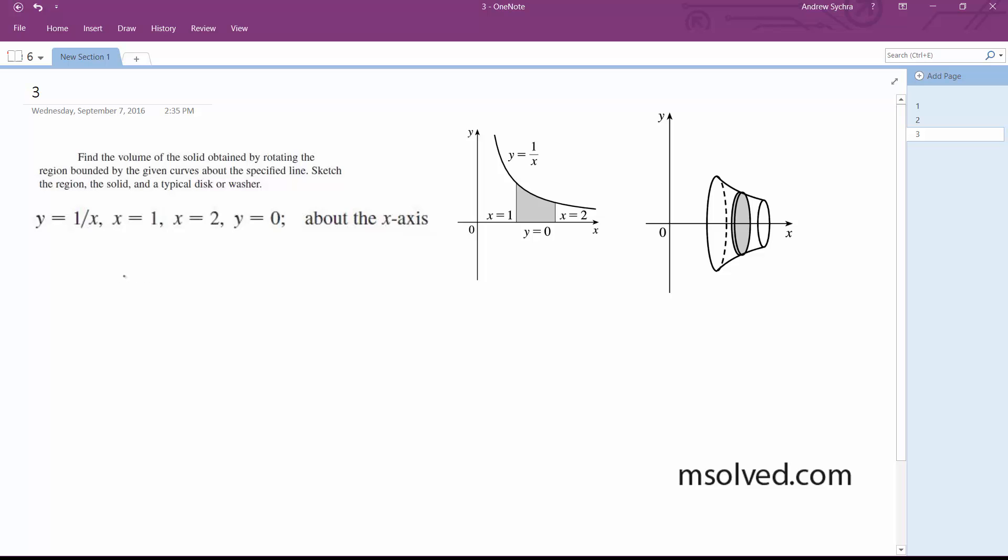And then we're pivoting around the x-axis, and this is according to the equation 1 over x, y equals 1 over x. So, following the pi r squared for the disks,